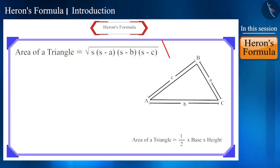Well friends, the difference between the two formulas is that area of a triangle equals half into base into height can only be used when we have information about both the base and the height of the triangle.